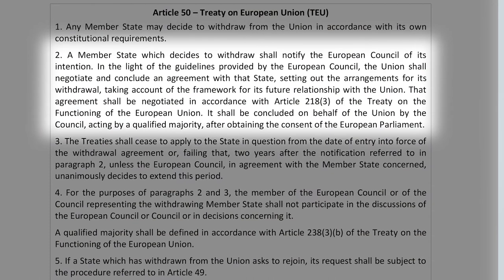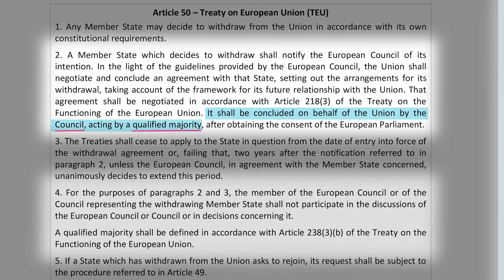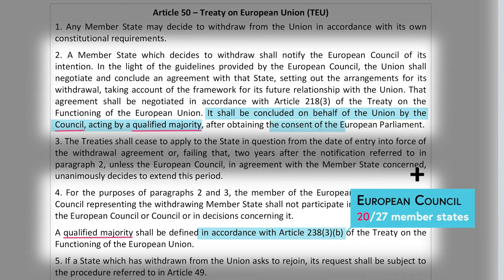However, the withdrawal agreement — the deal regulating the terms of exit between the EU and the withdrawing member state — must be approved both by the Council and the European Parliament. This effectively means that on the EU side, all institutions are somehow involved in the process of withdrawal.